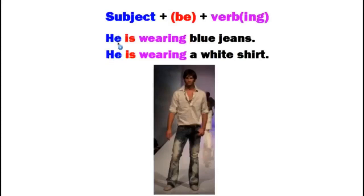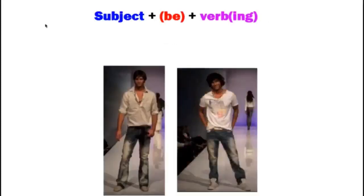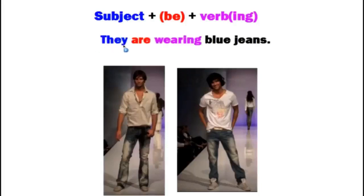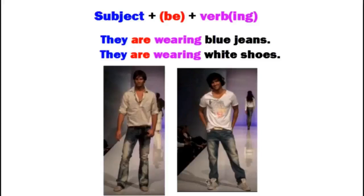He is wearing blue jeans. He is wearing a white shirt. Again — the subject 'he', the verb 'be', and the verb plus -ing — the continuous. For two people, the subject is 'they'. They are wearing blue jeans. They are wearing white shoes. The subject 'they' for two people, 'be' in the plural form, and the continuous verb 'wearing'.